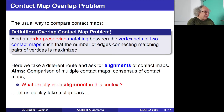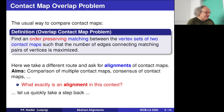Here we want to take a different route and ask: what are alignments of contact maps? The idea is not only to compare two contact maps, but to allow multiple alignments of contact maps, so that we can extract consensus structures or identify particularly conserved sub-structures or sub-elements within a large set of aligned structures.